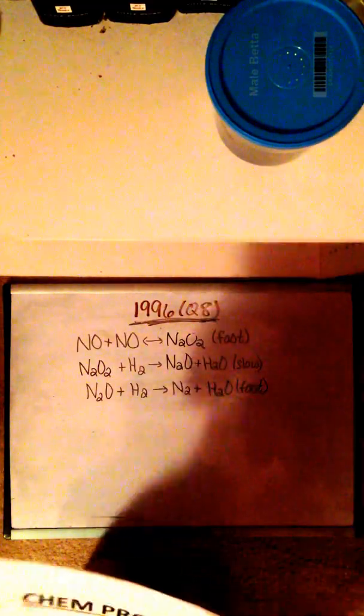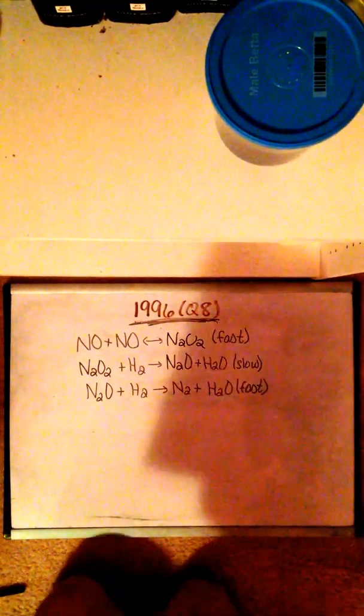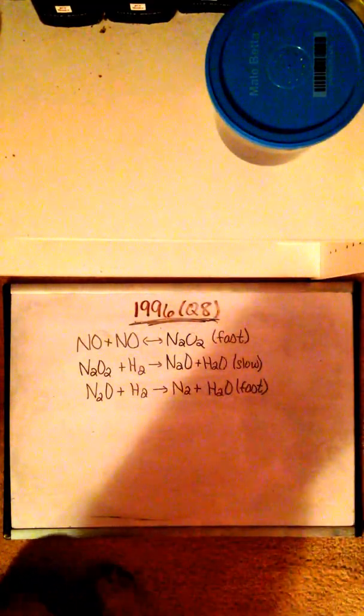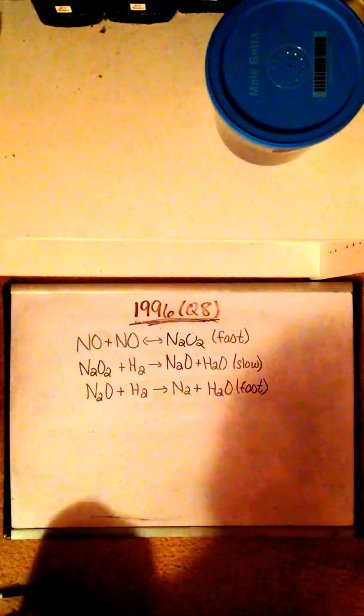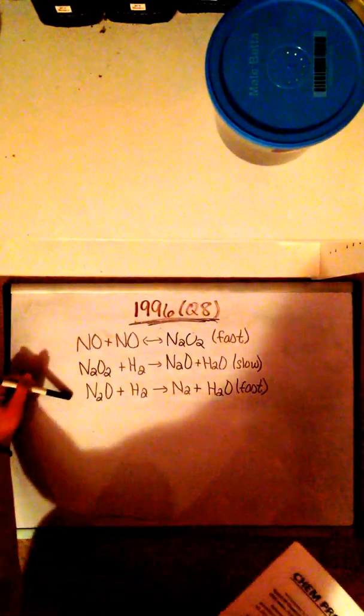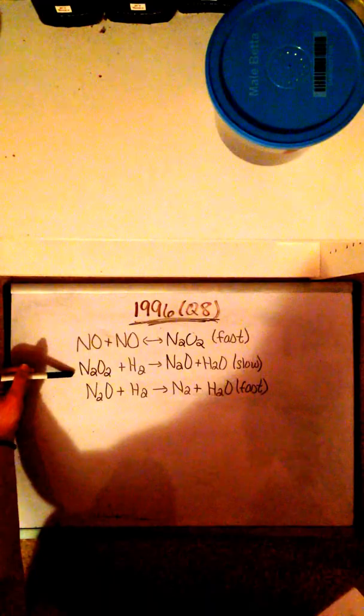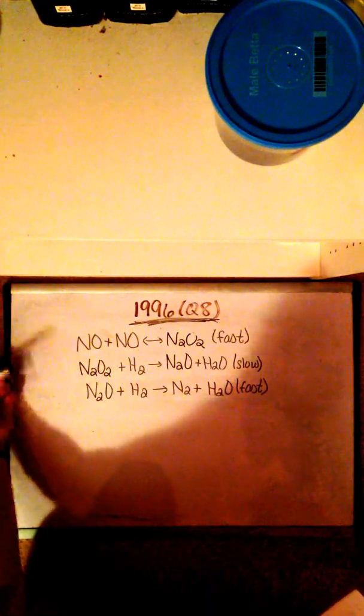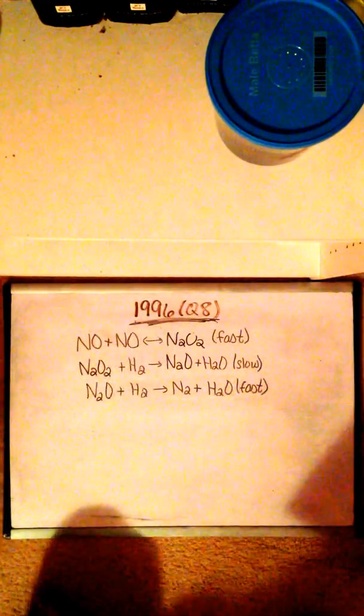So let's get started. Before answering any of the questions, we can see that we are provided with the three-step process of a reaction between NO and H2. Here is what is given. We have one fast step, one slow step, and another fast step. So here are the three steps to our mechanism.